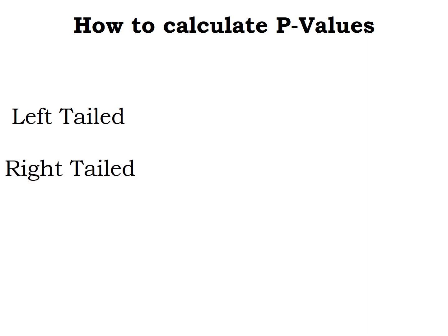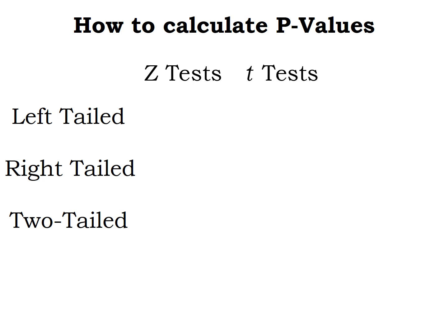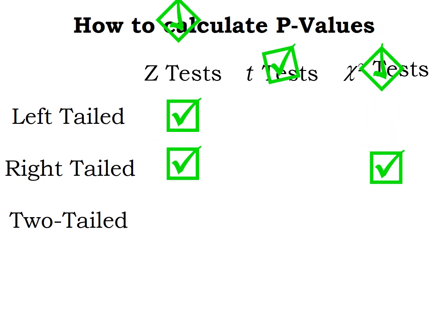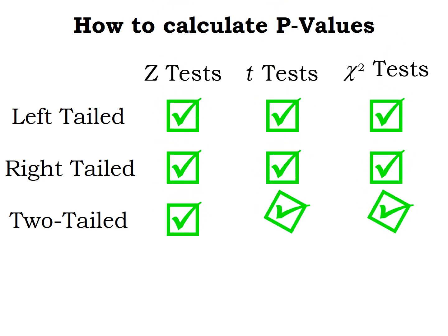We have left-tailed tests, right-tailed tests, and two-tailed tests. We also have tests based on z-scores, some based on t-scores, and some based on chi-squared scores. Every combination is possible — you can do left, right, and two-tailed tests using any of these distributions.